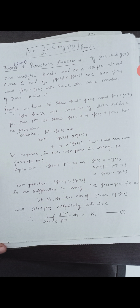Now let N1 and N2 be the number of zeros of F(z) and F(z) + G(z) respectively within C. So (1/2πi) ∫_C F'(z)/F(z) dz = N1. This is equation one. And (1/2πi) ∫_C [F'(z) + G'(z)] / [F(z) + G(z)] dz = N2.